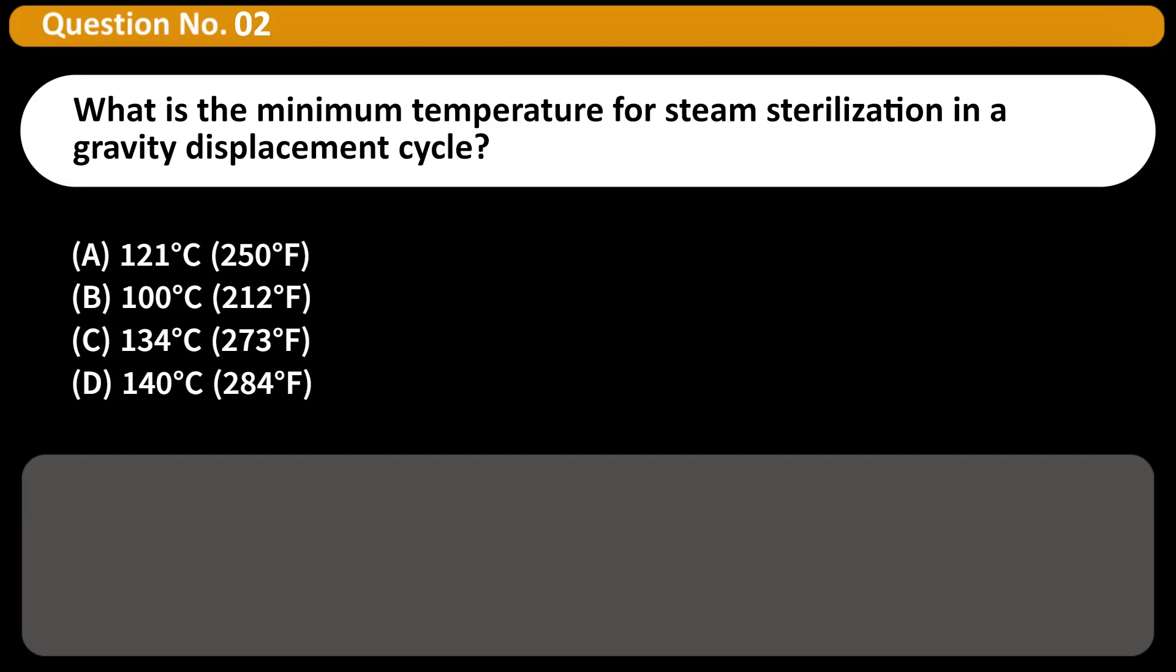What is the minimum temperature for steam sterilization in a gravity displacement cycle? A. 121 degrees Celsius (250 degrees Fahrenheit), B. 100 degrees Celsius (212 degrees Fahrenheit), C. 134 degrees Celsius (273 degrees Fahrenheit), D. 140 degrees Celsius (284 degrees Fahrenheit). Answer A. The standard temperature for gravity steam sterilization is 121 degrees Celsius or 250 degrees Fahrenheit.